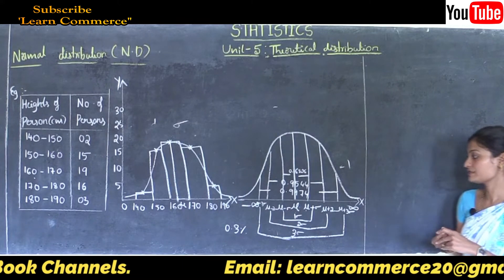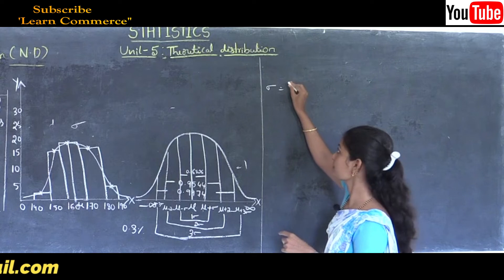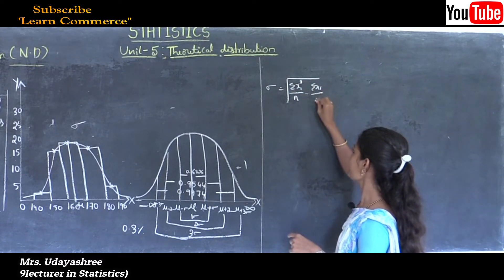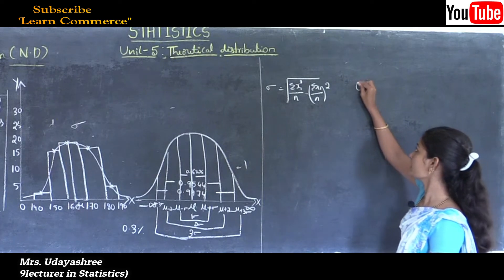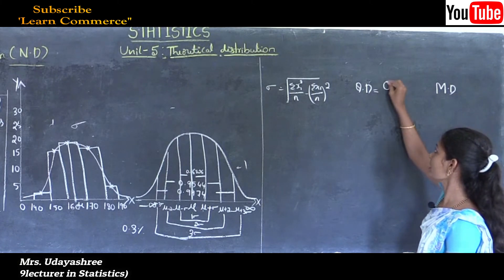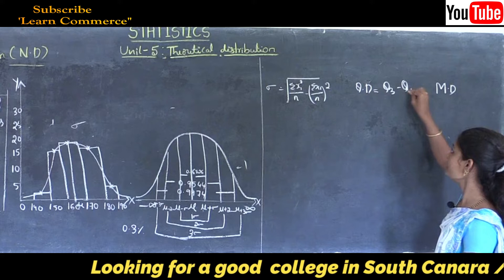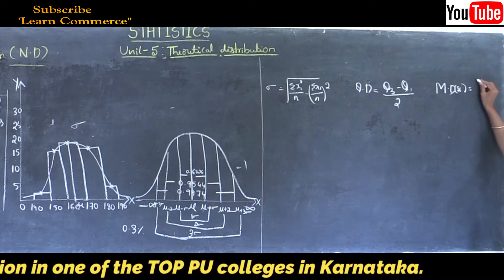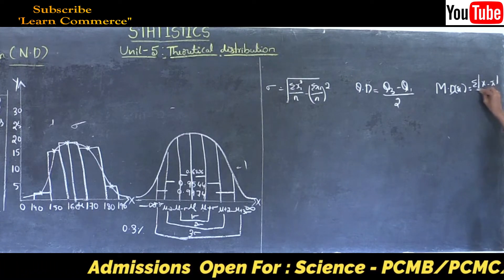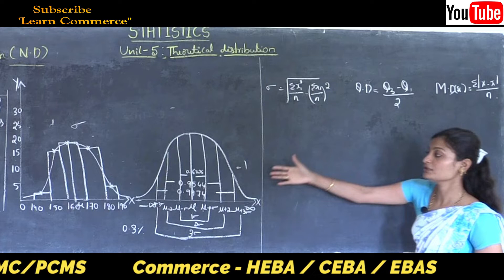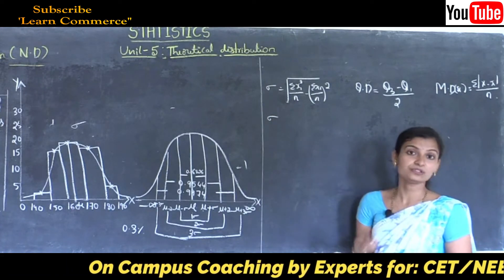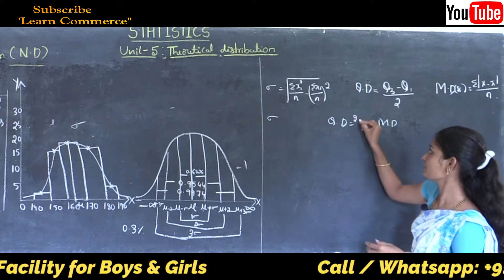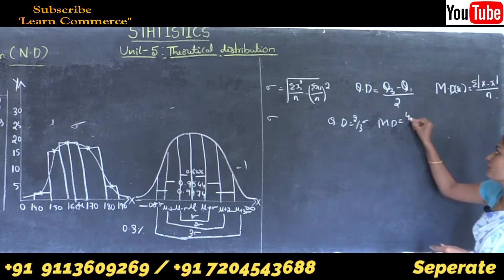We know the formula for standard deviation: sigma equals the square root of (summation of x-squared divided by n) minus (summation x divided by n) whole squared. Similarly, we know the formulas for quartile deviation and mean deviation. The quartile deviation formula is (Q3 minus Q1) divided by 2, and the mean deviation formula for ungrouped data is summation of |x minus x-bar| divided by n. In normal distribution, quartile deviation equals (2/3) sigma and mean deviation equals (4/5) sigma.